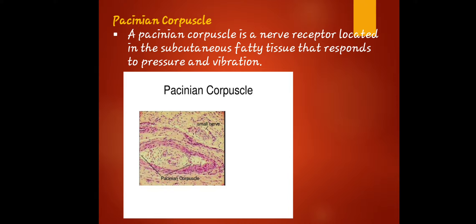Pacinian corpuscles are nerve receptors located in the subcutaneous fatty tissue that respond to pressure and vibrations. Pacinian corpuscles respond when the skin is rapidly indented but not when pressure is steady — because the focus is on vibration. If the pressure is stable, there is no response from the Pacinian corpuscles. They respond only to mechanical deformation depending on the presence of pressure and vibration.